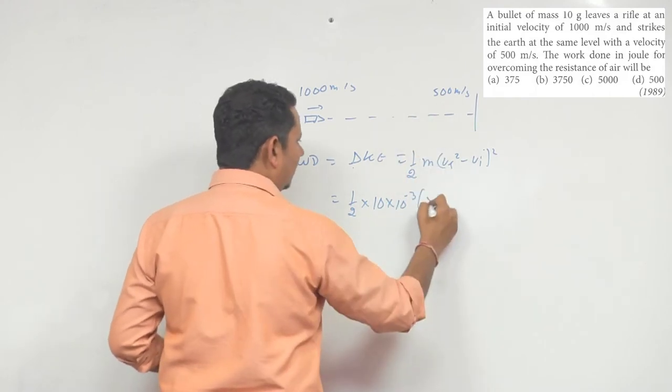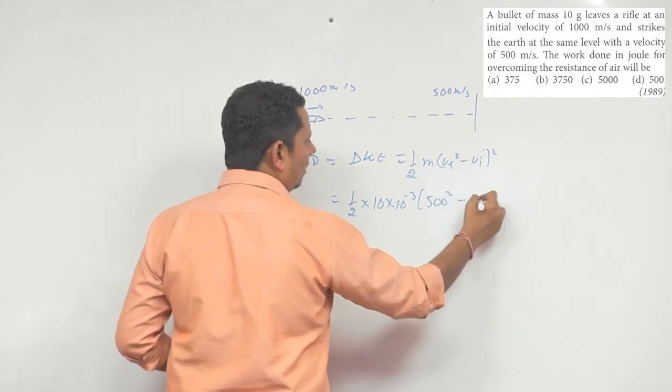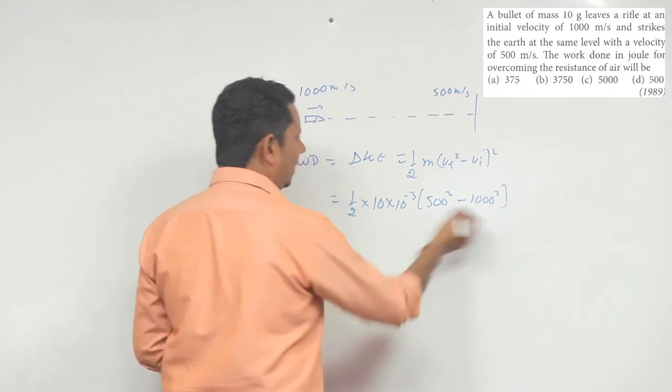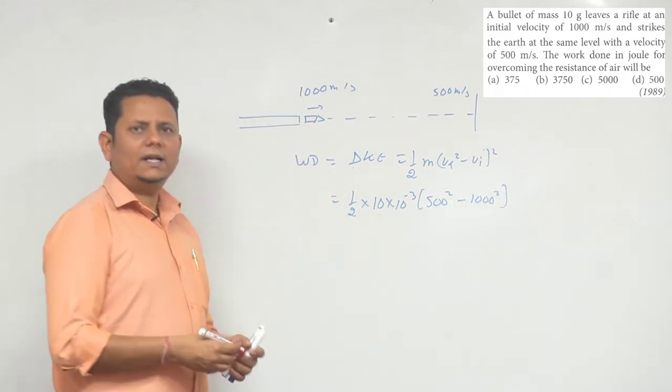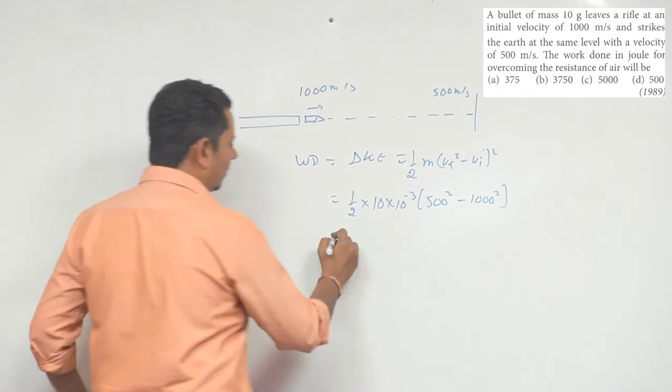Multiplied by velocity final squared, which is 500 squared, minus velocity initial squared, which is 1000 squared. Solving this, the final answer will be equal to...